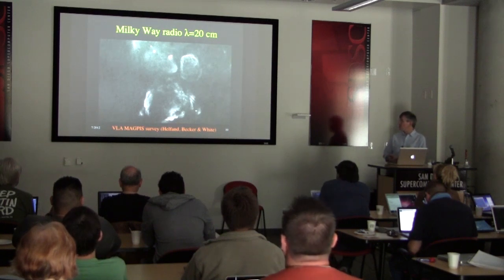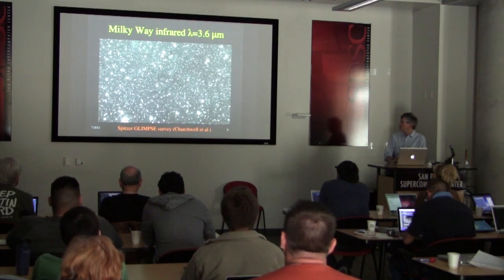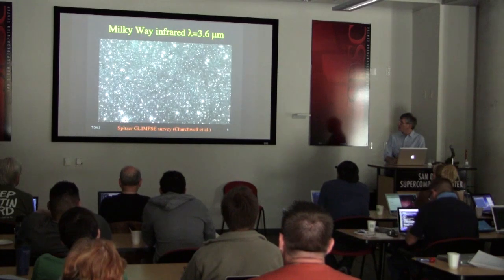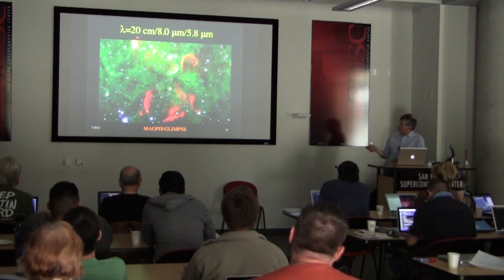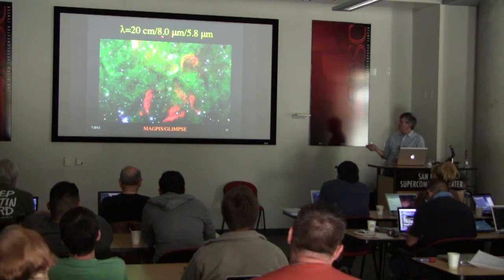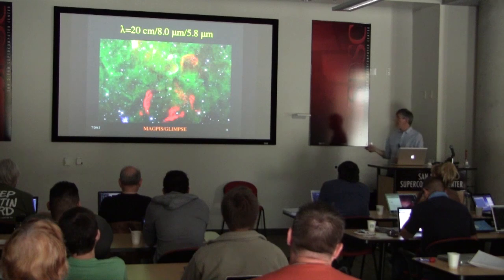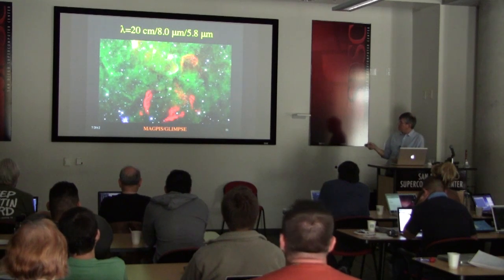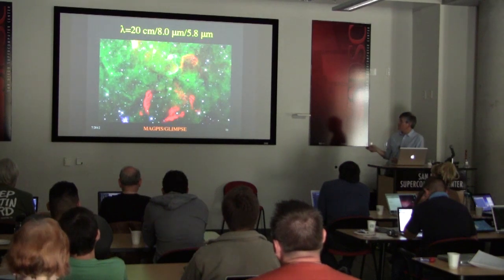Here's a VLA radio image of the same field from a different survey. If you go to longer wavelength infrared, there are definite correlations. This is a combined color image where red is the 20-centimeter radio, green is GLIMPSE 8-micron emission — mostly dust — and blue is GLIMPSE 5.8 microns, which is mostly stars.